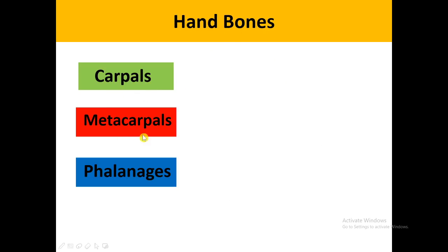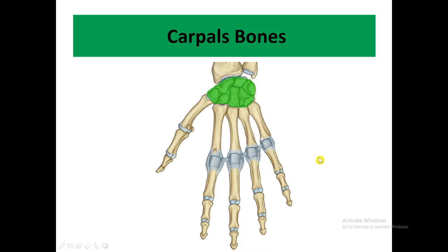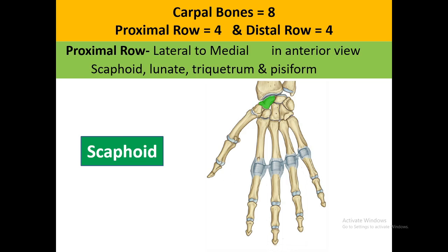Talking about the hand bones, in the hand we have carpals, metacarpals, and phalanges. Represented here: green color for the carpal bones, red color for the metacarpals, and blue color representing the phalanges. The carpal bones are total eight in number.